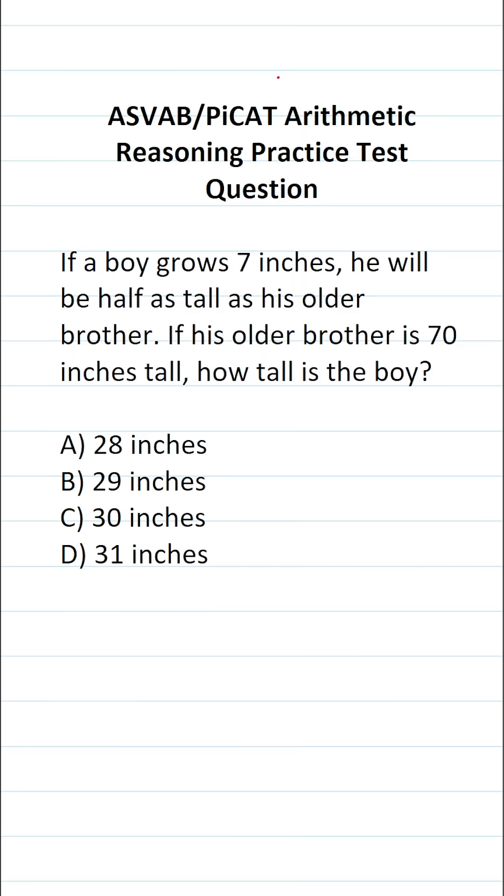In order to answer a question like this, we have to translate these statements into an equation that we can then solve. The height of the boy is unknown, so I'm going to represent the boy's height with the letter variable x. We know that if he grows 7 inches, that's going to be x plus 7. That is his height plus 7 inches. He will be...